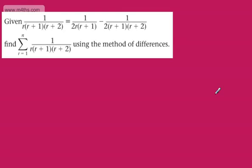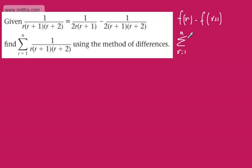This is our second video looking at summing a finite series using the method of differences. If you didn't see the first video, please watch that, as it has the main learning points. The take-home point was: if we have a series u_r that can be written as f(r) minus f(r+1), then to sum from r=1 to n, we sum f(r) minus f(r+1).